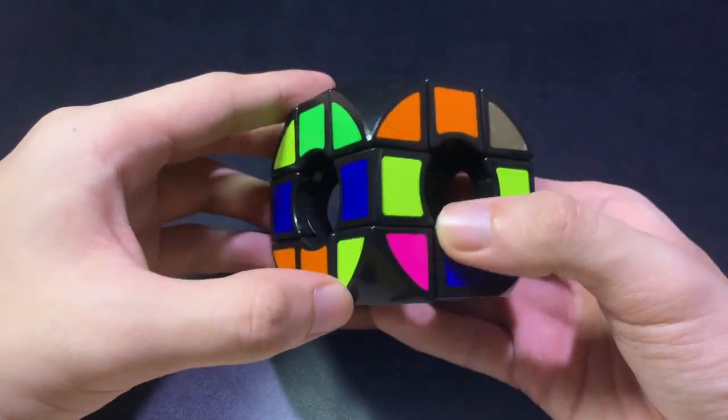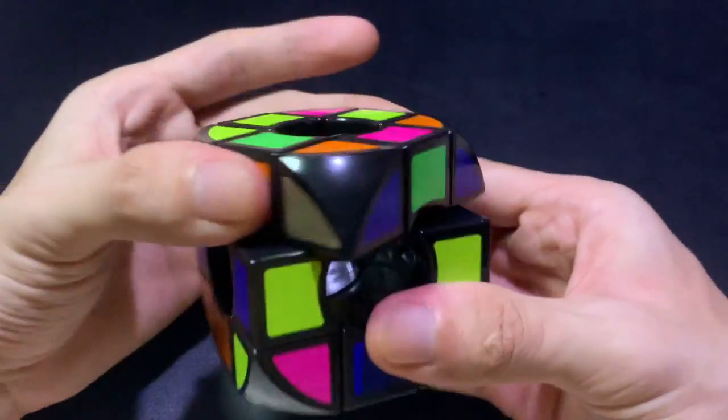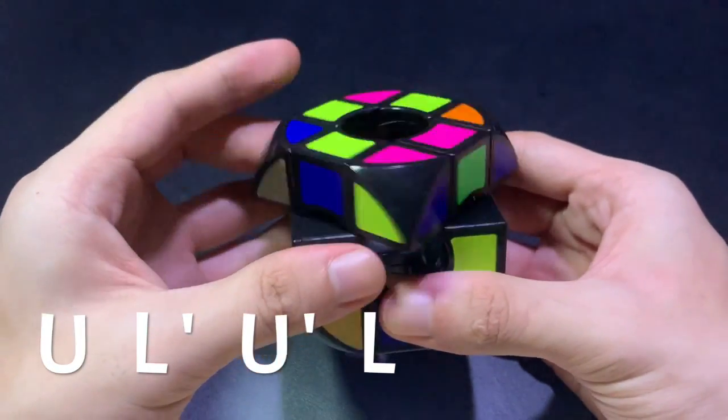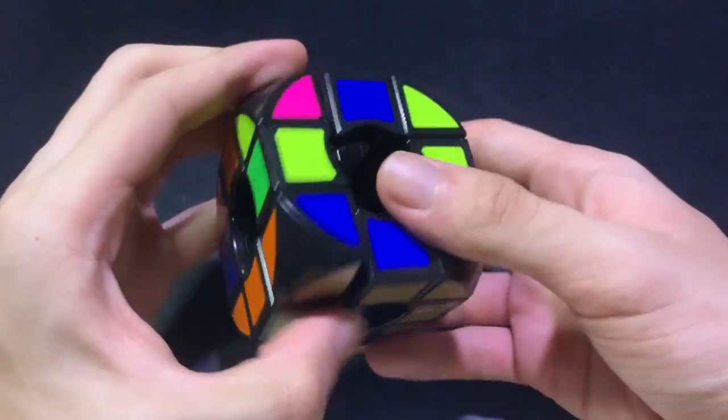And then to put it in its place, we can do u, u, then l prime, u prime, and l. Now it's in its place.